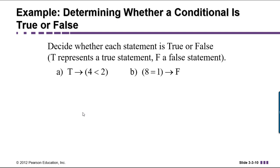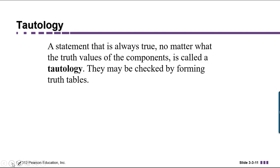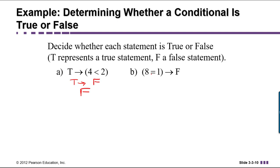Give this a try. Decide whether each statement is true or false. T will represent a true component statement and F a false component statement. Pause the video, write down your answers, then restart to see them. In part A, the antecedent is true and the consequent is 'four is less than two,' which is false. So we have true implies false — the promise is made and then broken, so this compound statement is false. In part B, the antecedent is 'eight equals one,' which is false. The consequent is also false. False implies false must be true, because the only time a conditional is false is when you have true implies false.